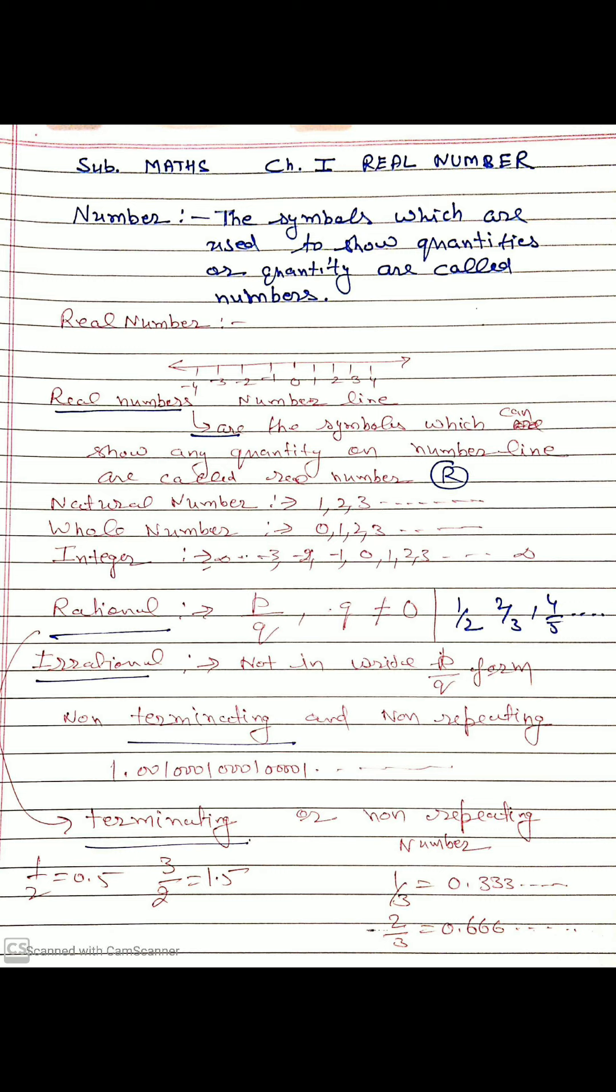Natural number: one, two, three, and so on up to infinity. It is denoted by N. Whole number: zero, one, two, three, and so on up to infinity. It is denoted by W.